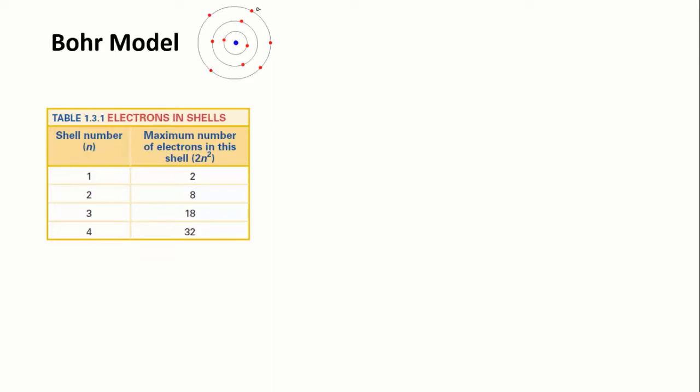The Bohr model of the atom, with its fixed energy levels, arranges the electrons according to a rule which says that the maximum number of electrons in each level is found by 2n squared, where n is the number of the level.